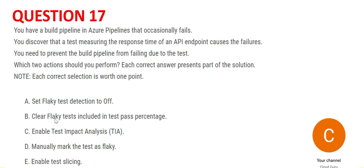Option B looks correct because it tells you to account for flaky tests when calculating a test pass percentage. Suppose the test pass percentage is 92% including flaky tests which may be false positives. If you remove those false positives, the total pass percentage becomes 85% instead of 92%, but that is fine — you should not include flaky tests. So B looks correct.